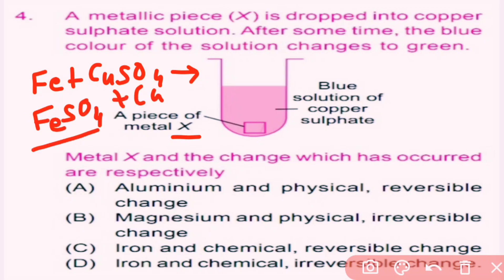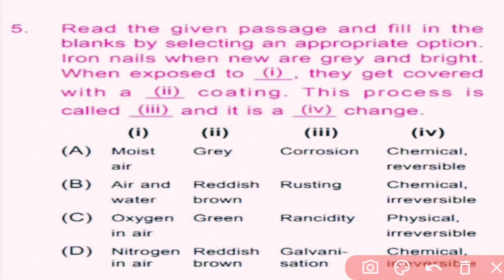Question number five: read the given passage and fill in the blanks by selecting an appropriate option. Iron nails when new are gray and bright. When exposed to air and water they get covered with a reddish-brown coating. This process is called rusting, and it is an irreversible and chemical change. So option B is correct.